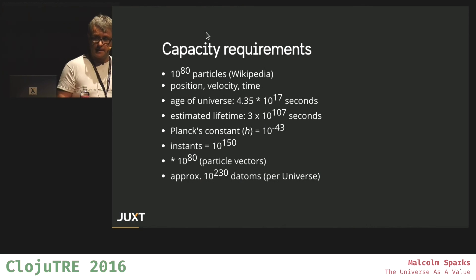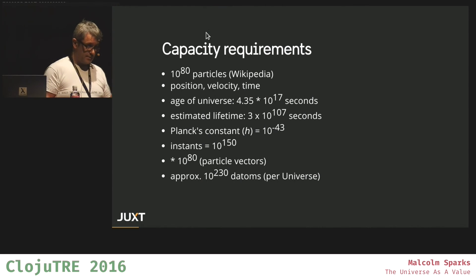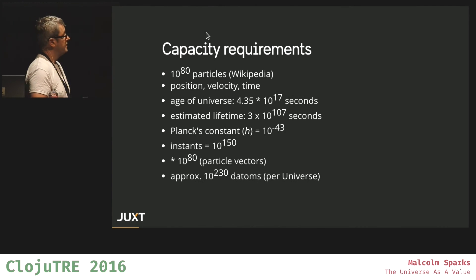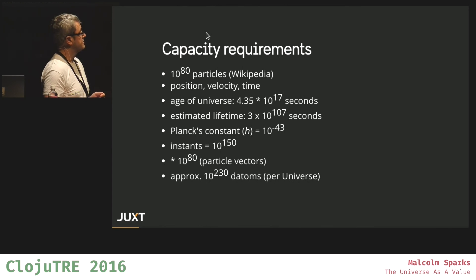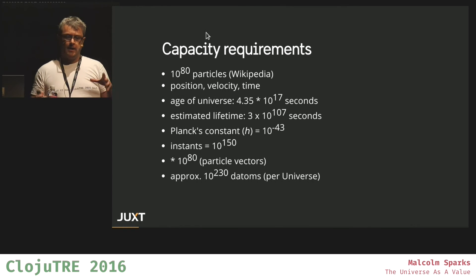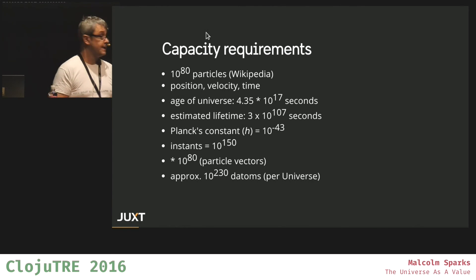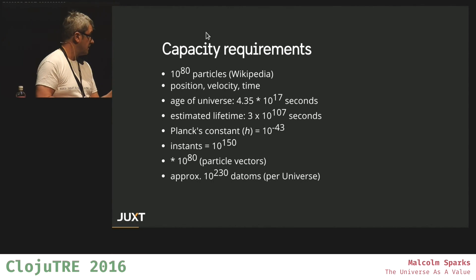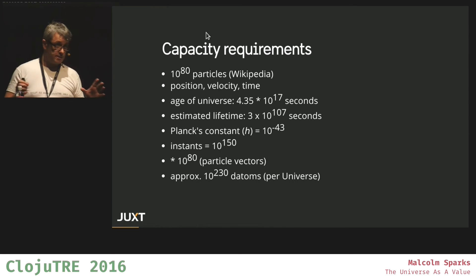So, some capacity requirements. I got from Wikipedia that there's about 10 to the power of 80 particles. But we want to capture not just position and velocity, we also want to know when the particle is as well. So the age of the universe is about 13 billion years, but it's going to hopefully last longer than that. I've estimated the lifetime based on the evaporation of supermassive black holes. So I've got a lot of seconds there, but lots of things can happen in the universe in one second. So we want to move down to the granularity of a pixel, and so I've taken Planck's time constant which is 10 to the minus 43, which gives us 10 to the 150 instances.